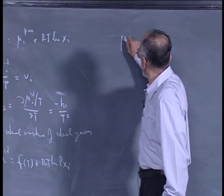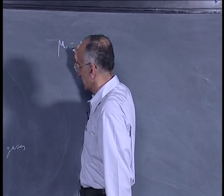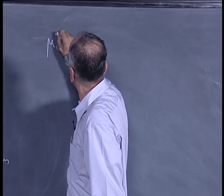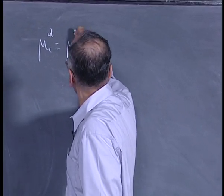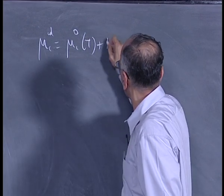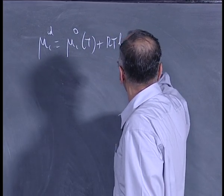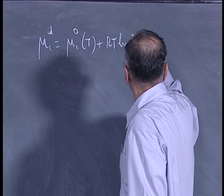So I get mu_i ideal equal to some function of T plus RT ln P·X_i. When X_i goes to 1 and P goes to 1, this term goes to 0, and you get pure substance i. So pure i at P equal to 1 — we usually measure P in bars — when P equal to 1 bar, F of T is simply mu_i, the chemical potential of pure i at the temperature of the mixture at pressure equal to unity. So we write mu_i ideal equal to mu_i^0 of T plus RT ln P·X_i.